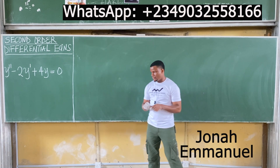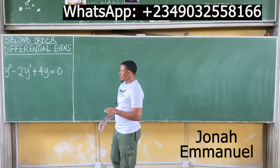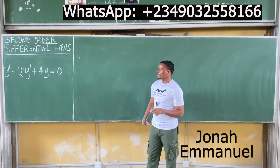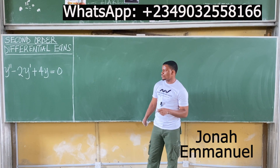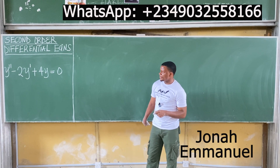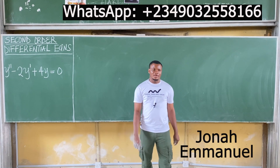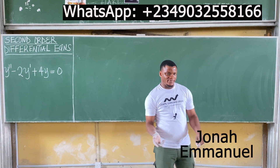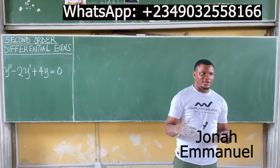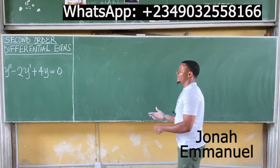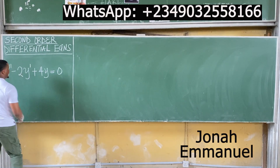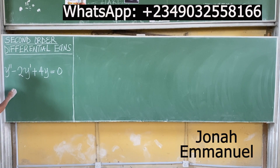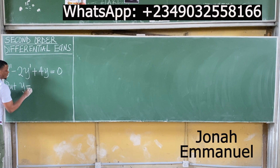We have a second order differential equation: y'' minus 2y' plus 4y equals zero. Here y'' is d²y/dx² and y' is dy/dx. As usual, the first step is to let y equal exponential mx.